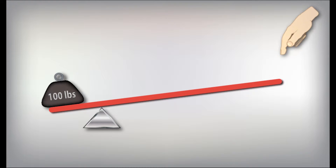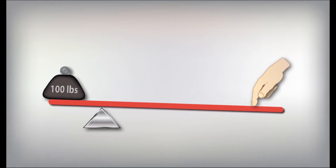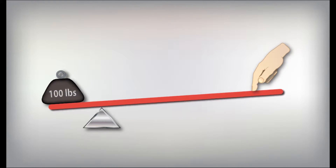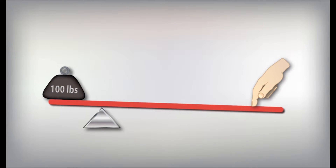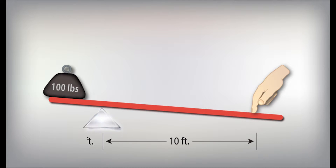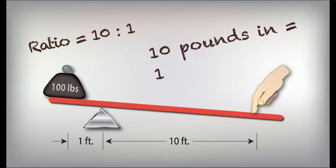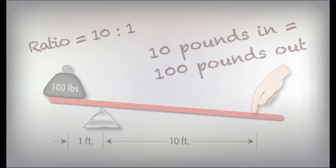Hydraulic leverage is analogous to mechanical leverage. Both transmit force using a small input to result in a large output. In the case of mechanical leverage, the length of the lever multiplies the input force. Here, 10 feet of lever to the right of the fulcrum and one foot to the left yields a ratio of 10 to 1, so an input force of 10 pounds lifts 100 pounds.